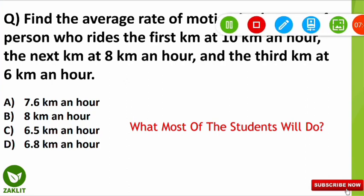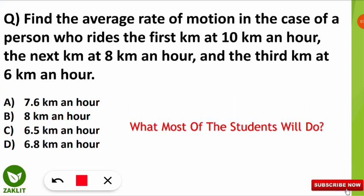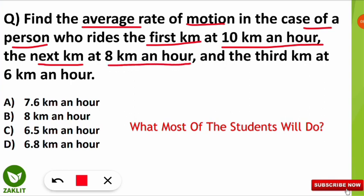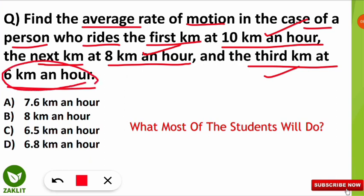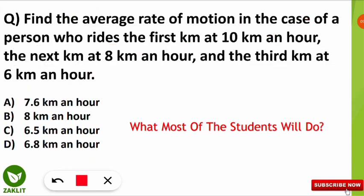The next question is also frequently asked in the NET examination. The question is: find the average rate of motion for a person who rides the first kilometer at 10 km/h, the next kilometer at 8 km/h, and the third kilometer at 6 km/h. We have to find the average speed of that person.